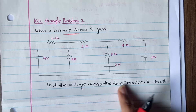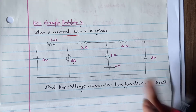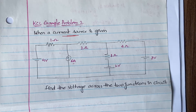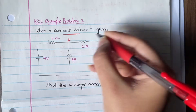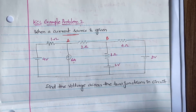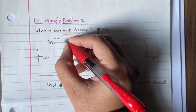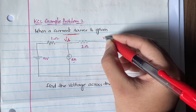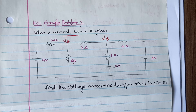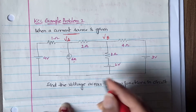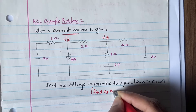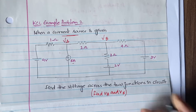You have to find the voltage across the two junctions in the circuit. So the first step is to identify the junctions. The two junctions are junction A and junction B. At junction A, let us assume the potential difference is Va, and at junction B, let us assume it is Vb. Your job is to find out Va and Vb.